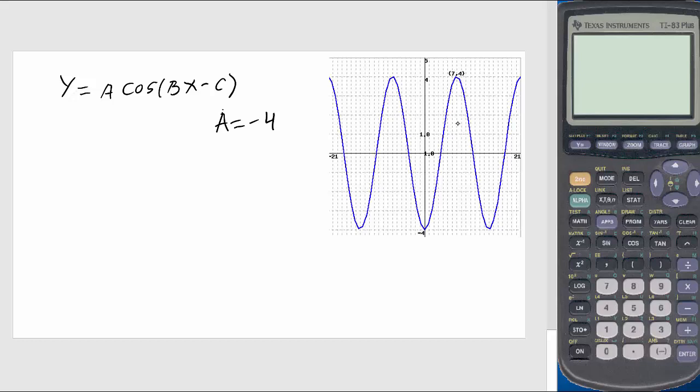So this whole length is 14, so your period is 14 for this. So what should we write? You write 14 equals 2π over B.